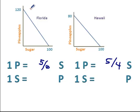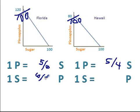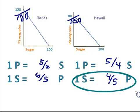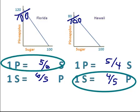Next let's look at the opportunity cost of producing one sugar. Divide again by sugar and we can see that for Florida the opportunity cost of producing one unit of sugar is six-fifths of a pineapple, and for Hawaii it would be four-fifths of a pineapple. For producing sugar Hawaii has the lowest opportunity cost because four-fifths is smaller than six-fifths, and for pineapples Florida has the lowest opportunity cost. So Florida should produce pineapples and Hawaii should produce sugar.